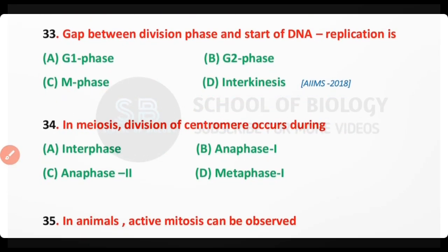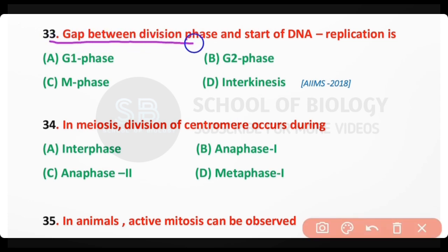Question number 33. The gap phase between the division phase as well as the start of DNA replication is: G1 phase; G2 phase; M phase; interkinesis. The correct answer is option A. The gap phase between mitosis and the start of the next DNA replication phase is G1 phase.